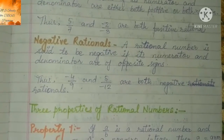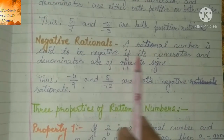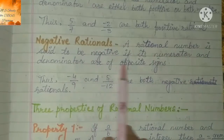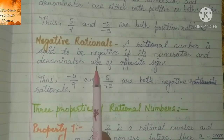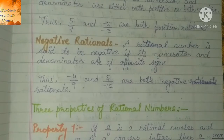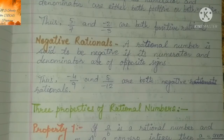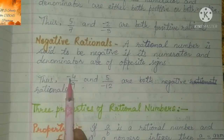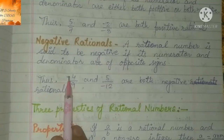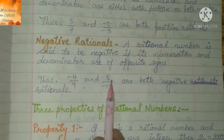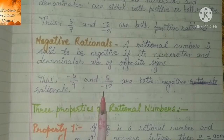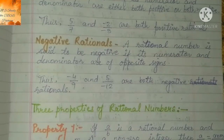उसके बाद आजाएंगे negative rational numbers पर. तो negative rational numbers कौन से होते हैं? A rational number is said to be negative if its numerator and denominator are of opposite signs. Opposite signs का मतलब — अगर numerator negative है तो denominator positive होगा, अगर denominator positive है तो numerator negative होगा. जैसे minus 4 by 1 — यह negative है तो यह positive है. और 5 by minus 12 — यह positive है तो यह negative है. Means both signs should be opposite, then it will be a negative rational number.